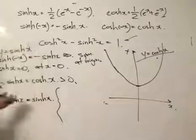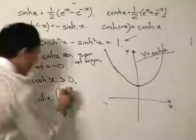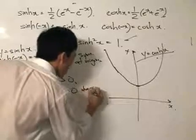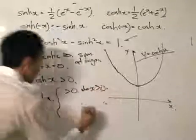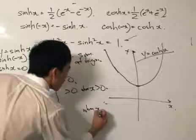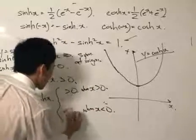And when x is less than 0, this would be less than 0. Let's just verify. So we got this over here, this definition is over here.